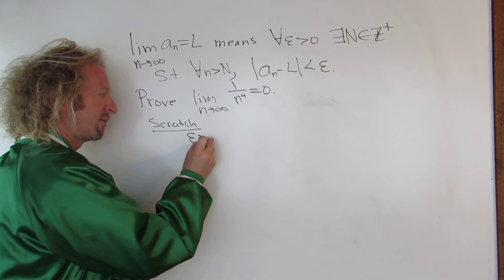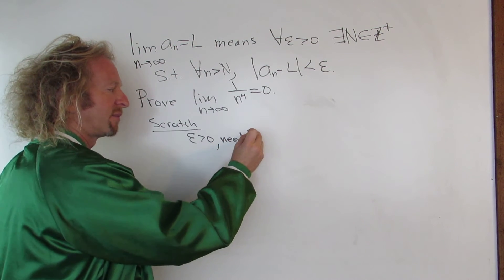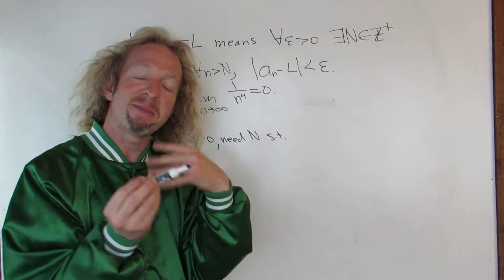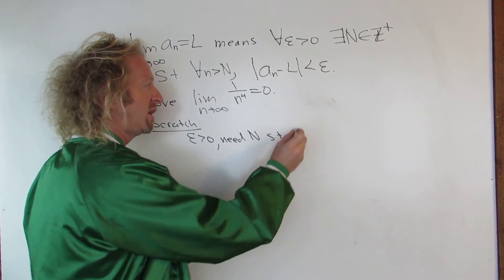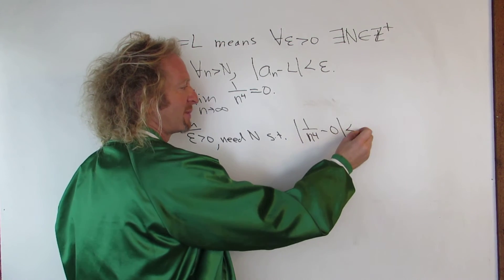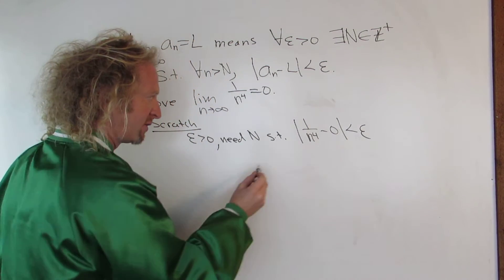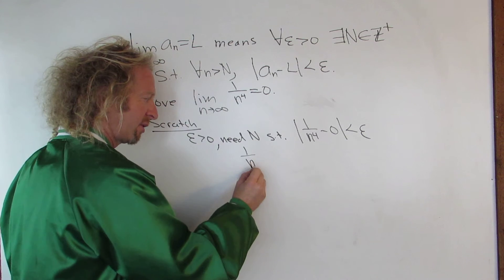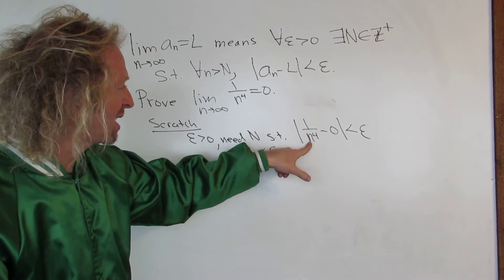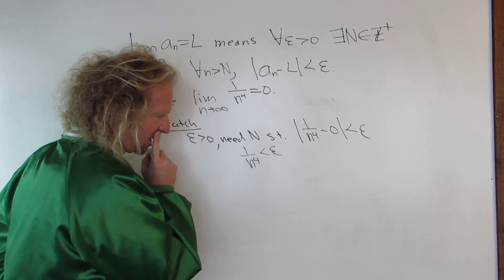So we have epsilon greater than zero and we need a capital N such that we can make the distance between a sub n and zero small. We need one over n to the fourth minus zero to be less than epsilon — that's what we need in our proof. So now what you can do is solve this for n. We have one over n to the fourth. You can drop the absolute value because n is a positive integer, so you don't care about the absolute value.